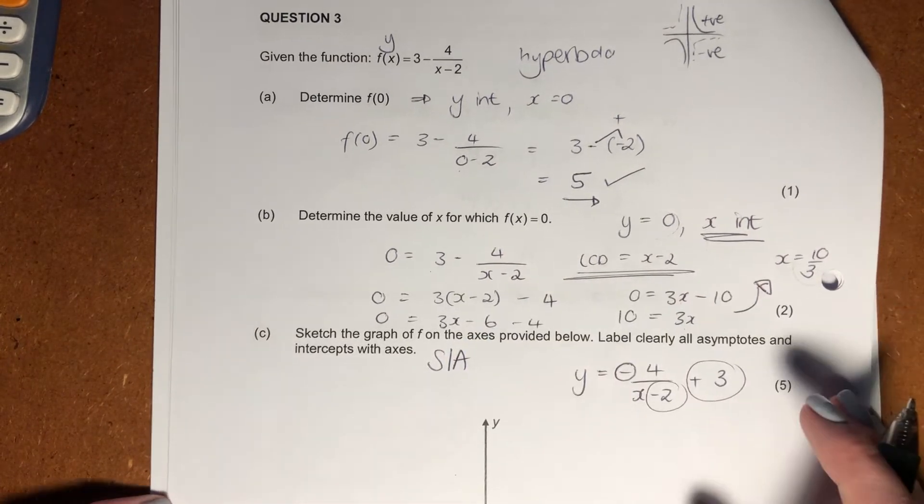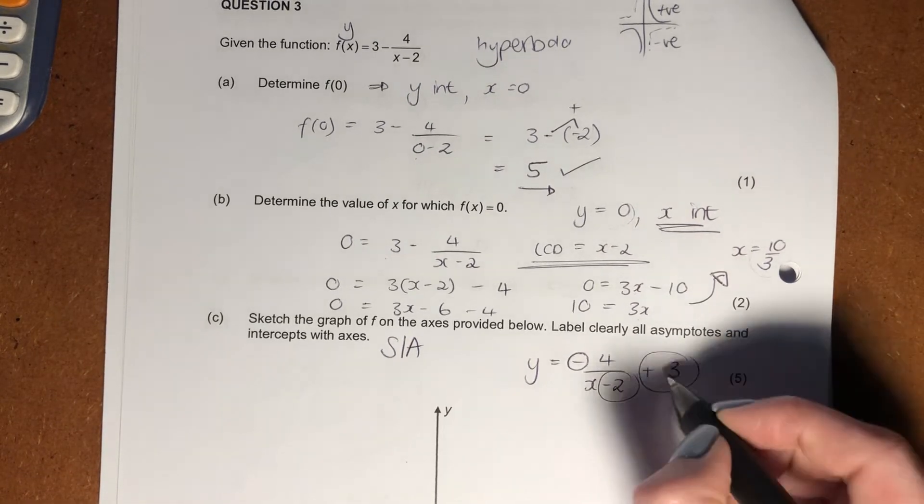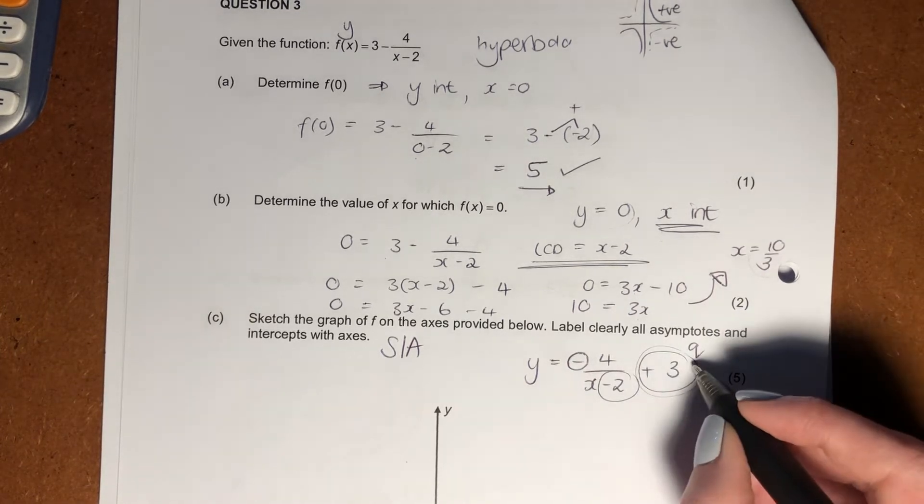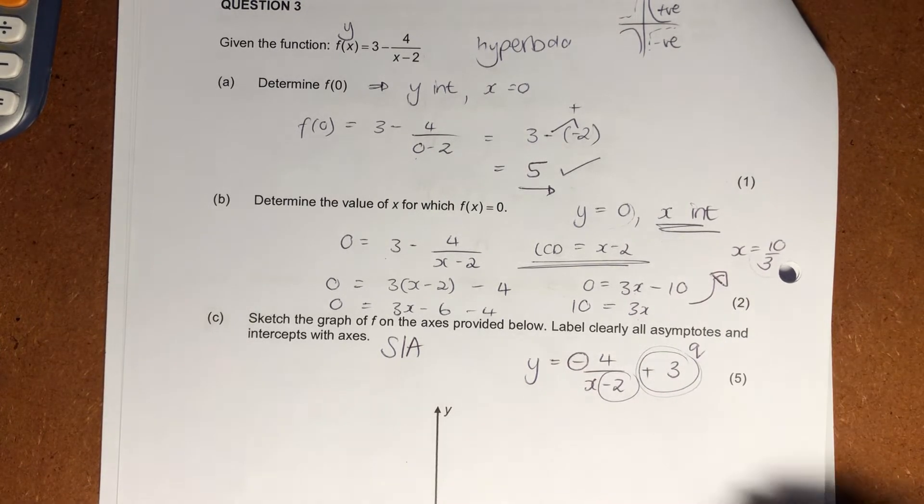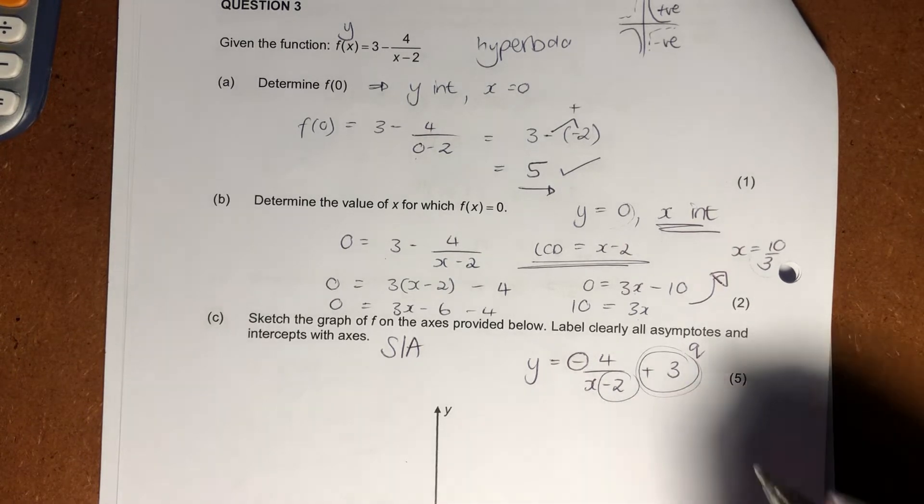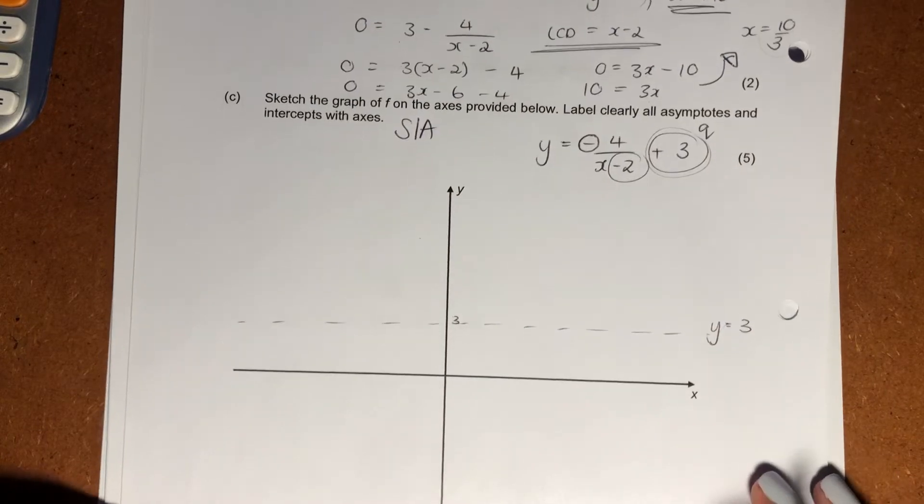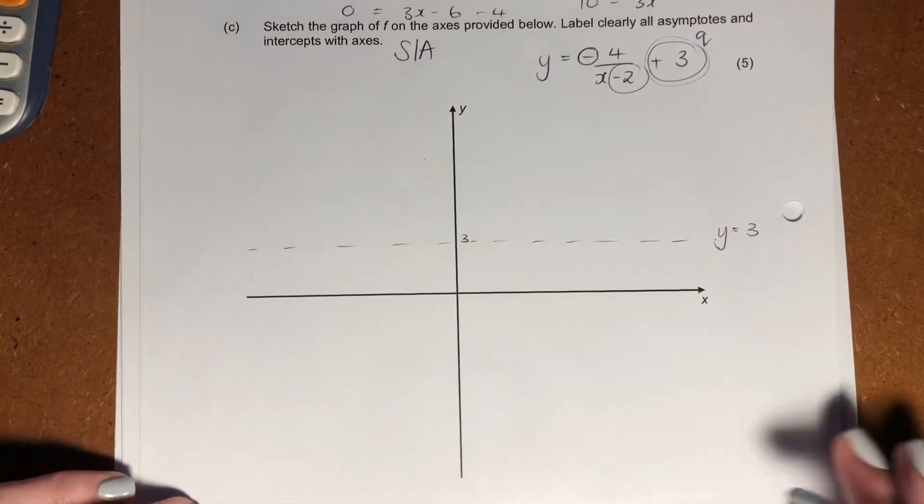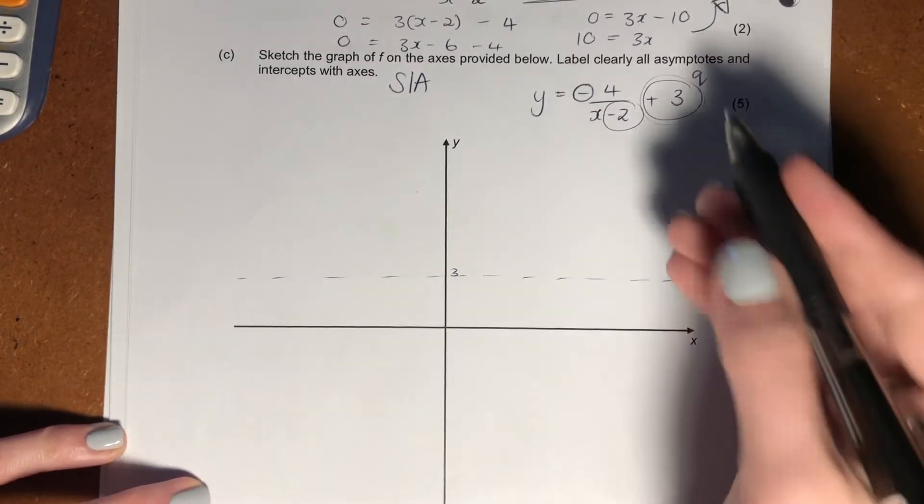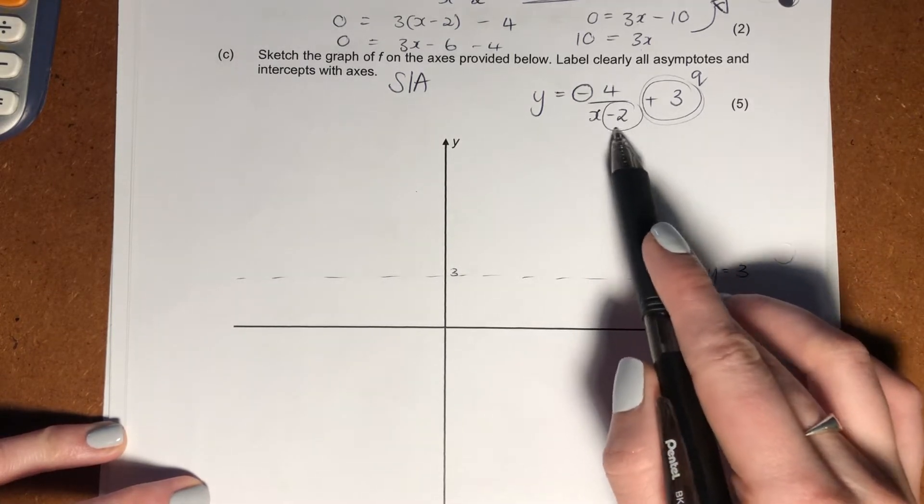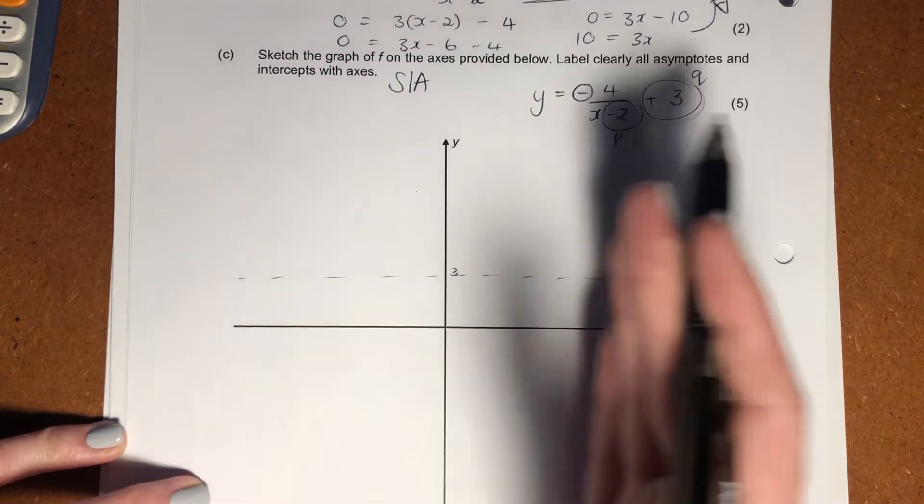So let's go and put our asymptotes in first. Our first asymptote is this one over here. We call this our Q value, and this tells us about our horizontal asymptote. So it's where y equals 3. So there's 3, and that's our asymptote over there. Label it nicely. You've just got your first mark. Then we have this, and this is our P value. To write our asymptote for x, we always have to take the opposite sign of what's there.